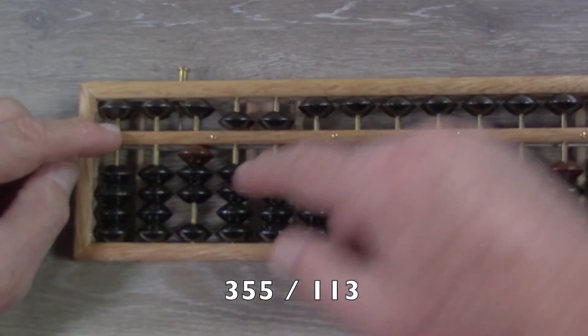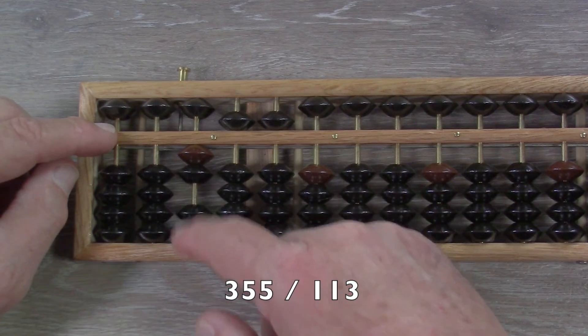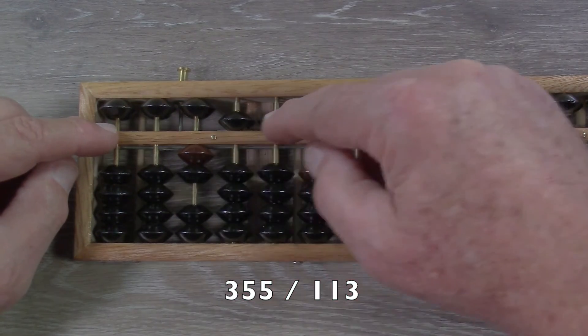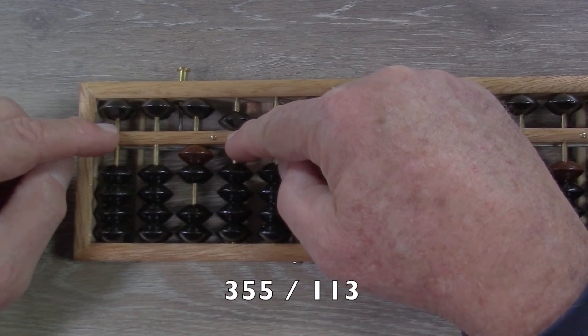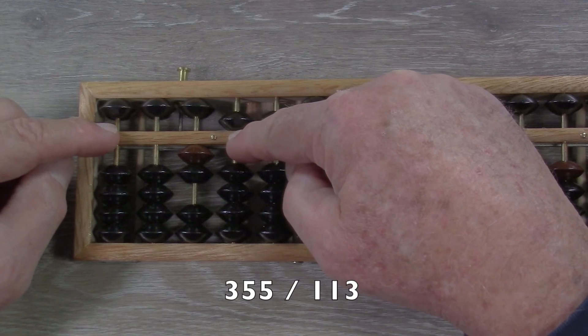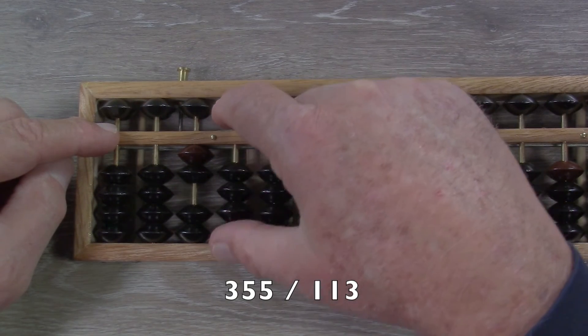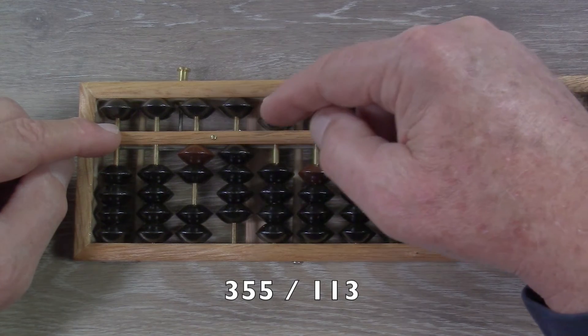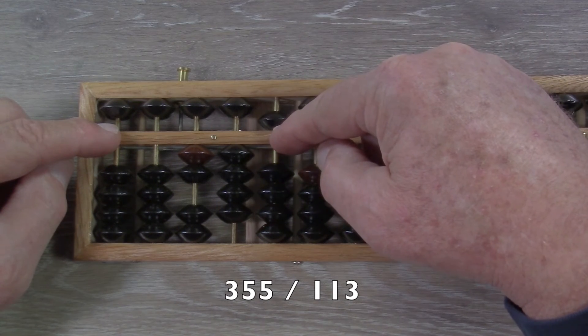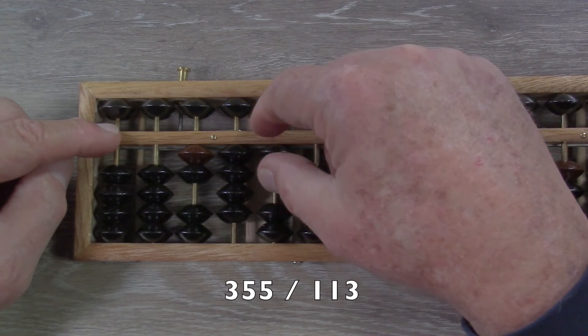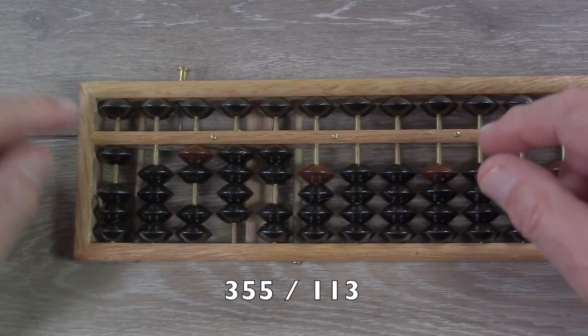So, let's start out with 113. Subtract 1. That's a direct subtraction. Here, we have to subtract 1. We don't have one to subtract, so we subtract 5 and add back 4. That's a 5's complement operation. And here, we're going to subtract 3. We do another 5's complement. So, there is the first one.